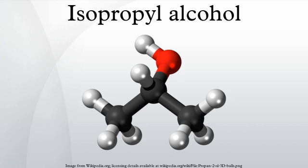Isopropyl alcohol forms an azeotrope with water, which gives a boiling point of 80.37 degrees Celsius and a composition of 87.7 wt% isopropyl alcohol. Water-isopropyl alcohol mixtures have depressed melting points. It has a slightly bitter taste and is not safe to drink.